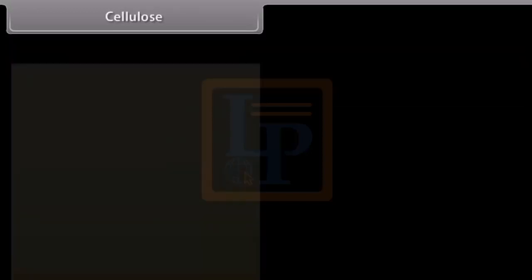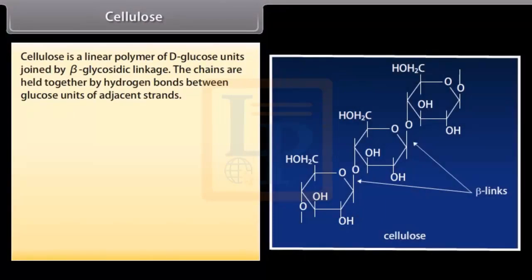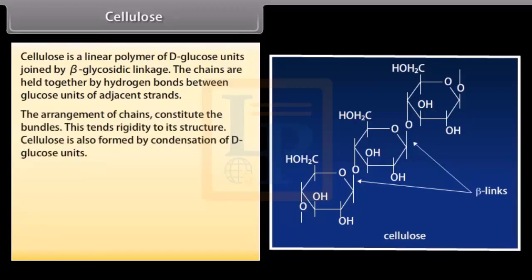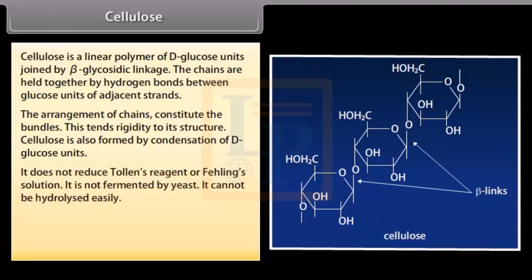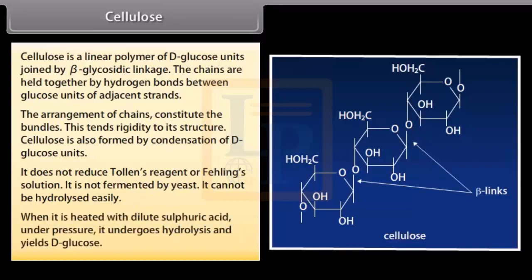Cellulose is a linear polymer of D-glucose units joined by beta-glycosidic linkage. The chains are held together by hydrogen bonds between glucose units of adjacent strands, and this arrangement of chains constitutes bundles, lending rigidity to its structure. Cellulose is also formed by condensation of D-glucose units. It does not reduce Tollens' reagent or Fehling's solution, is not fermented by yeast, and cannot be hydrolyzed easily. When heated with dilute sulfuric acid under pressure, it undergoes hydrolysis and yields D-glucose.